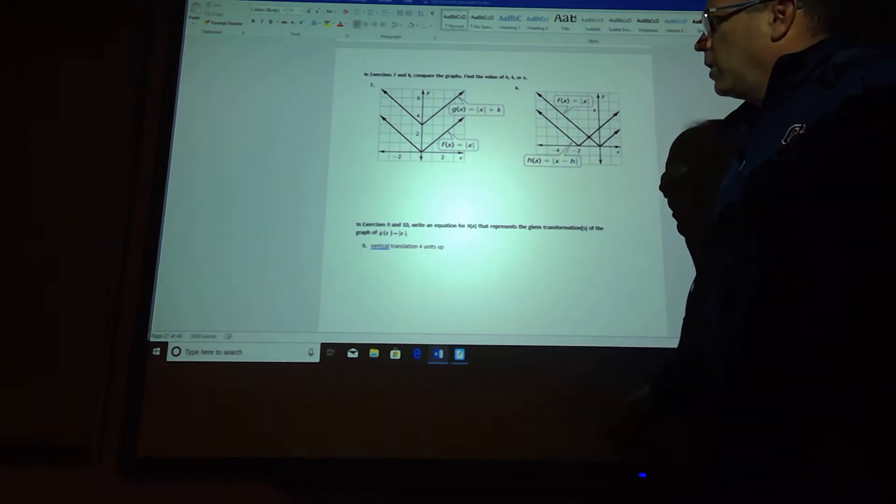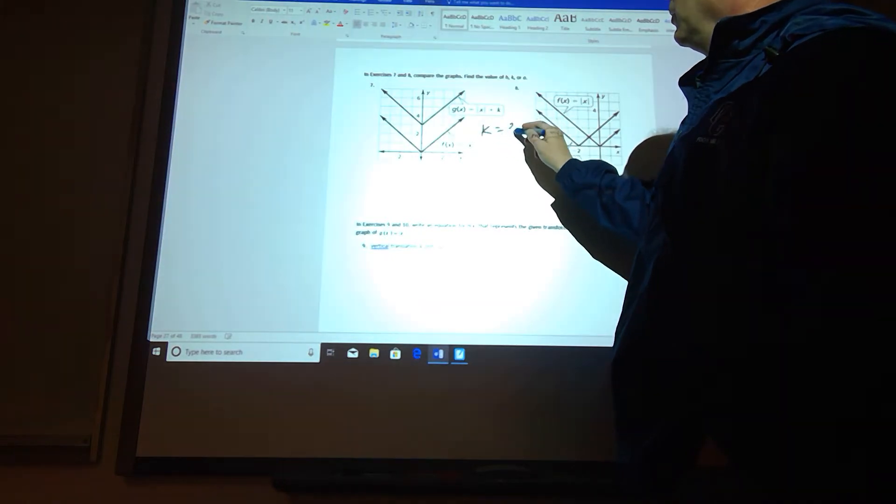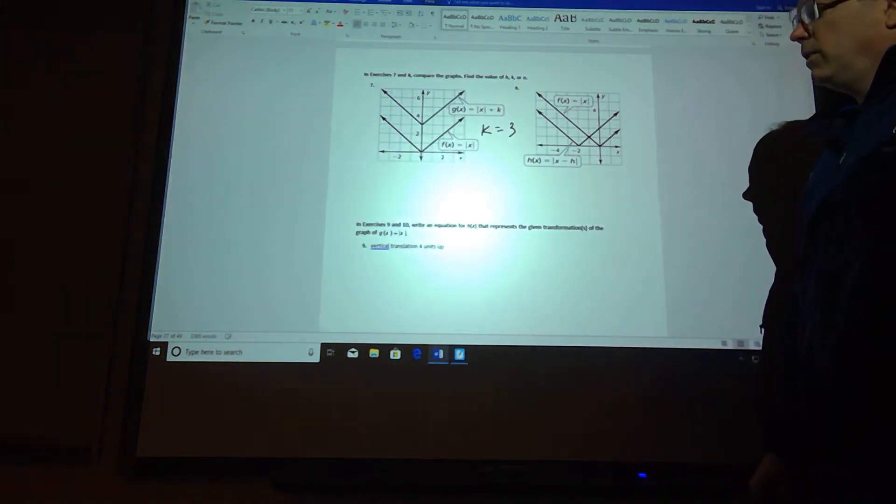Number 7, we're trying to go from this graph to this graph. So what was our k value? Our k value has to be equal to 3 because it shifted up 3.